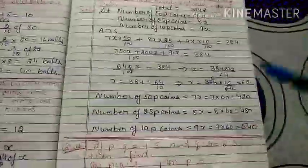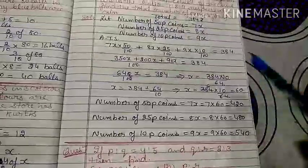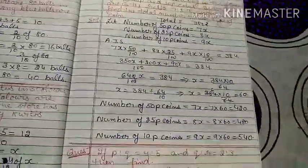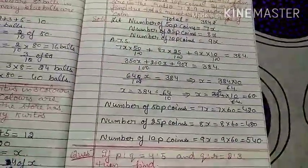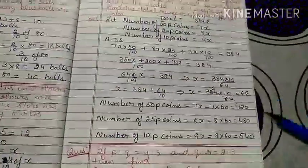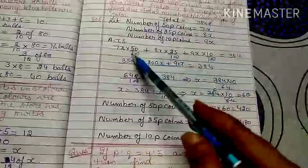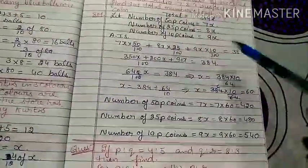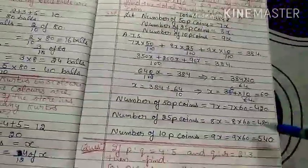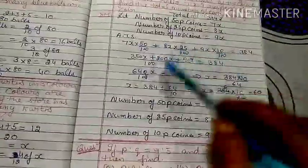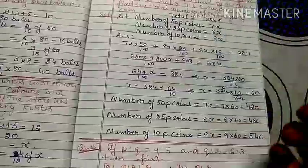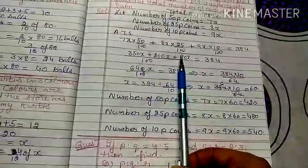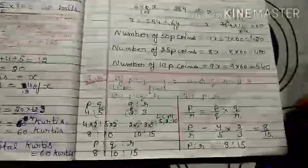Note: the quantities 420, 480, and 540 are number of coins, not rupees. If you want to find the rupees, multiply each quantity by the respective coin value divided by 100 — that is the unitary method. When you total them you again get 384 rupees, confirming the answer is correct.